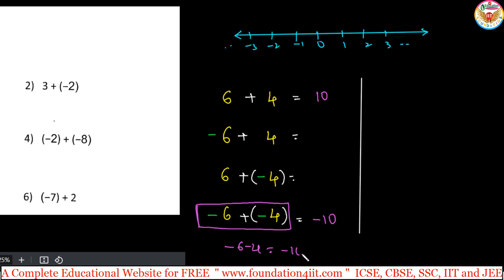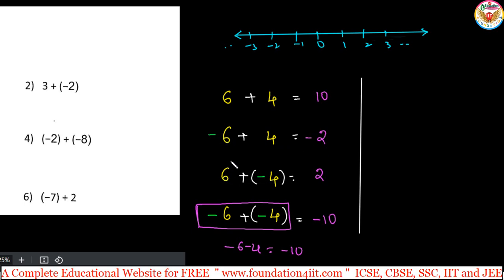Generally you can see in some books: minus 6, minus 4 gives minus 10. There is no separate plus symbol, but imagine minus 6 adding with minus 4, so the result is minus 10. When one is negative and one is positive, you should go for subtraction. Take 6 and 4 — subtracting gives 2 — but whichever number is bigger, that number's sign you keep.